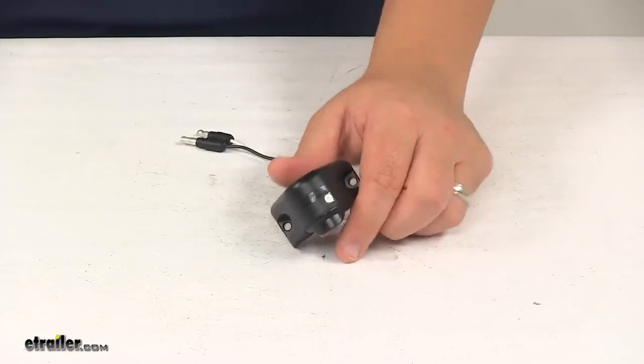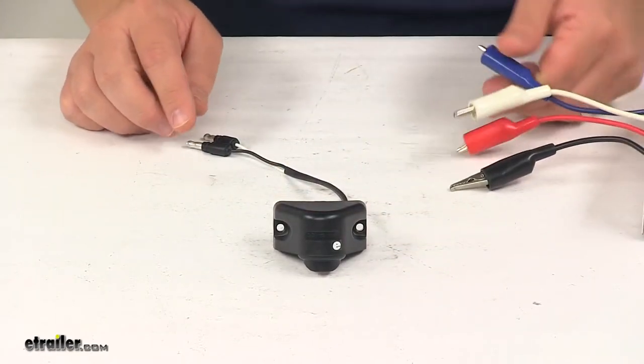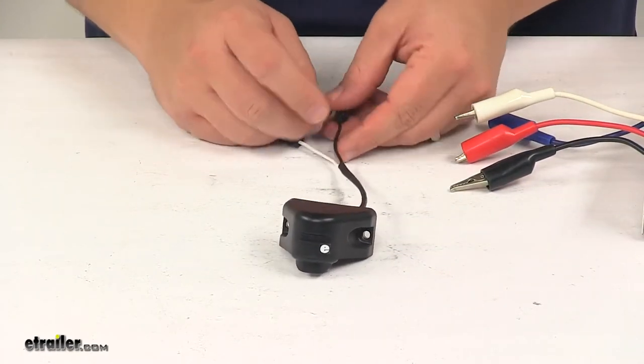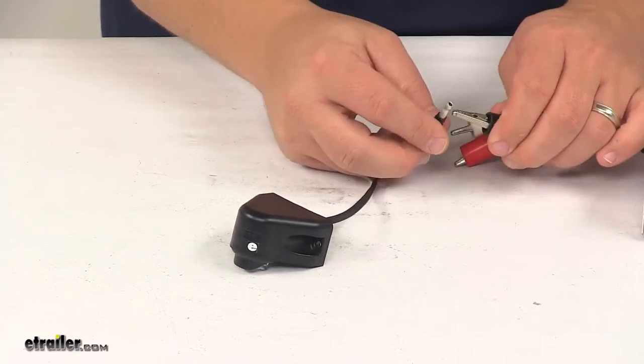We're going to go ahead and hook it up to power. That way you can see what it looks like with some power running to it. And we'll also be able to turn off our overhead lights so you can see it in a lower light setting.